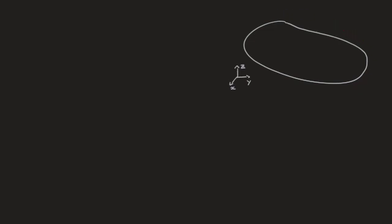In the upper right hand corner here I've drawn a three-dimensional plane, and the scenario we're going to be looking at is we have three points A, B, and C, all of which are contained in that plane, and we need to find a normal vector to this plane. The coordinates are: A with coordinates 1, 2, 1; B with coordinates 4, 1, and 3; and finally C with coordinates 1, 5, 0.